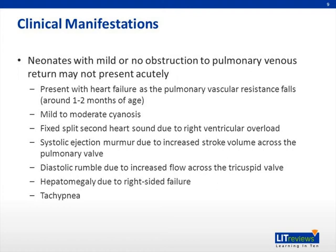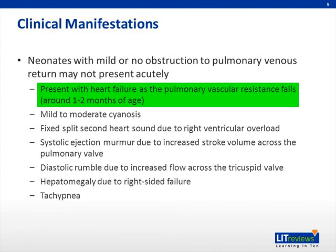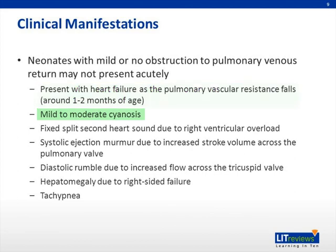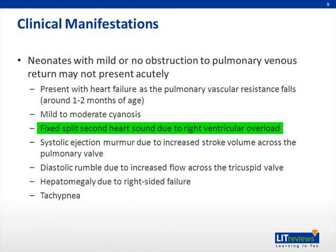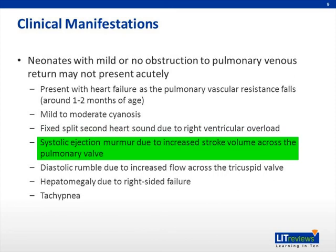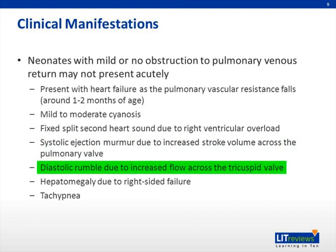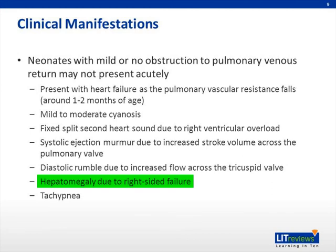In contrast, neonates with mild or no obstruction to pulmonary venous return may not present acutely. These patients typically present with heart failure as pulmonary vascular resistance falls, around one to two months of age. Patients will have mild to moderate cyanosis, which could be missed in the immediate newborn period. On physical exam, there is a fixed split second heart sound due to right ventricular overload, a systolic ejection murmur due to increased stroke volume across the pulmonary valve, a diastolic rumble due to increased flow across the tricuspid valve, hepatomegaly due to right-sided heart failure, and tachypnea due to pulmonary overcirculation.